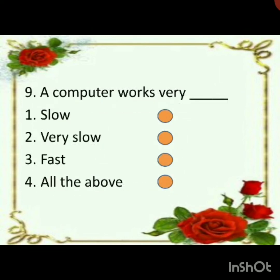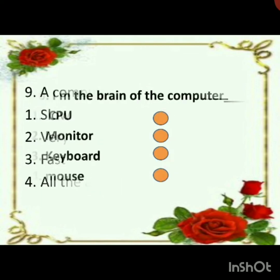Ninth one: a computer works very dash. See the options here - slow, very slow, fast, or all of the above. A computer works very slow? No. A computer works very fast - see the third option, fast. Which is the right option? You have to make the tick mark for the right option.